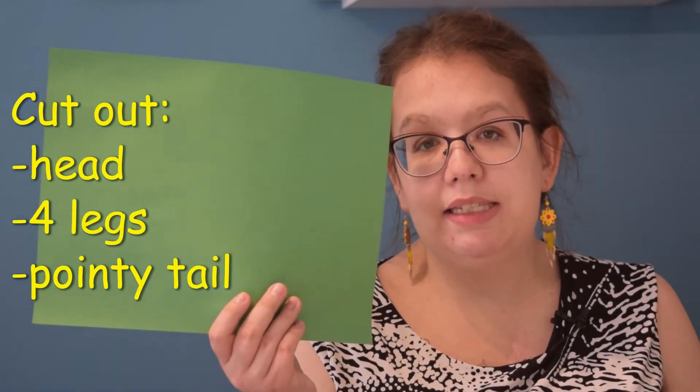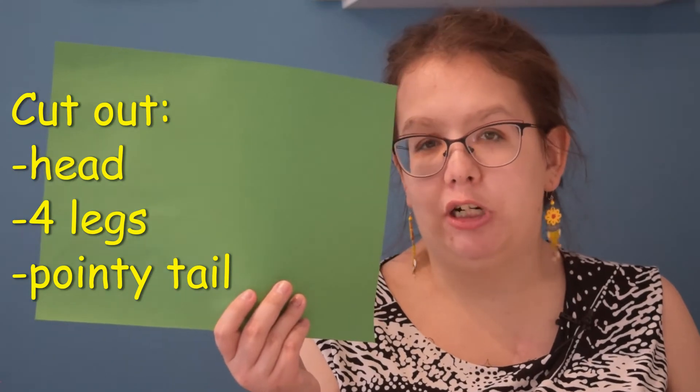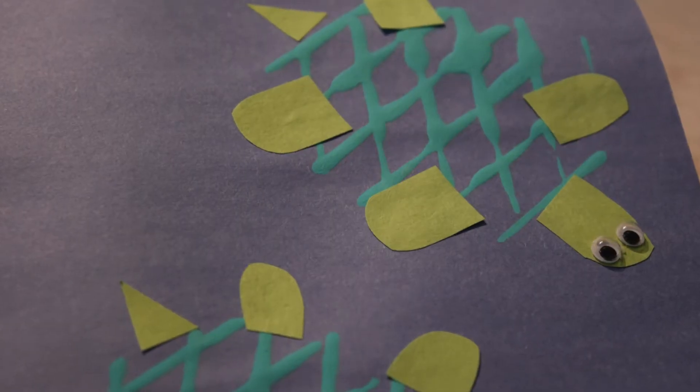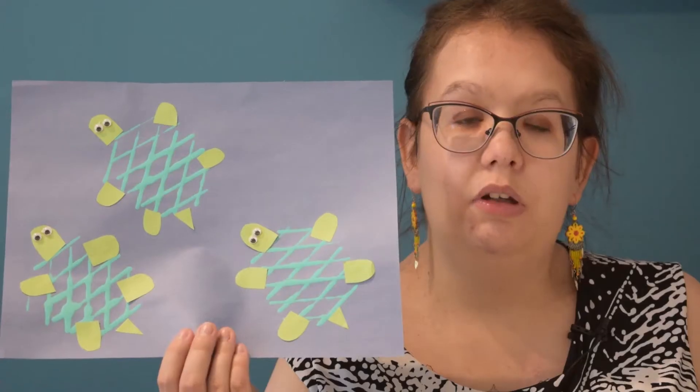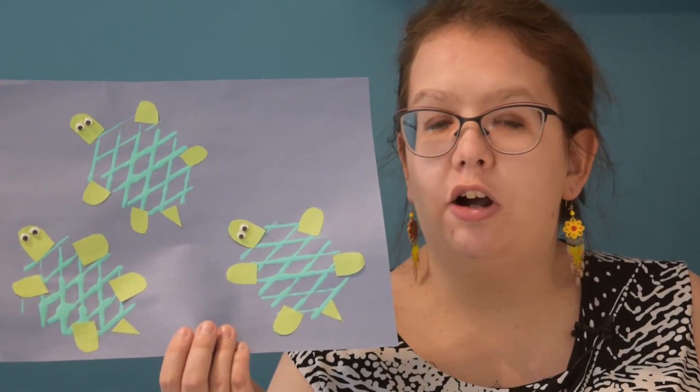Cut four legs and a tail out of green construction paper. Glue your turtle parts onto your blue construction paper.